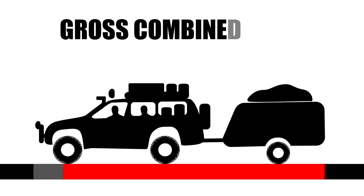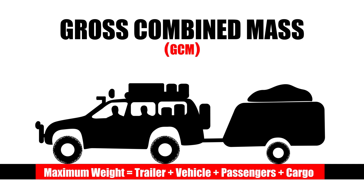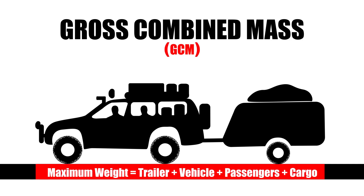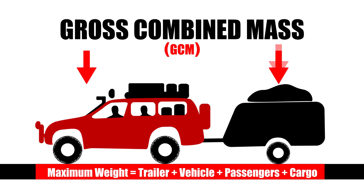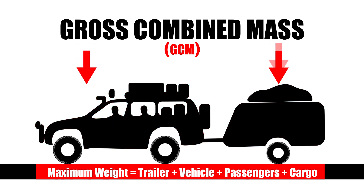Finally, gross combined mass or gross combined vehicle mass is the maximum allowable weight of the trailer plus tow vehicle plus all passengers and cargo. This is determined by the original vehicle manufacturer and is the sum of the axle loads for the vehicle and trailer.